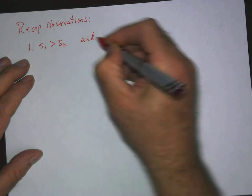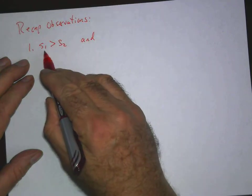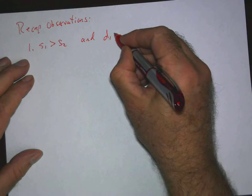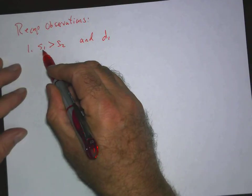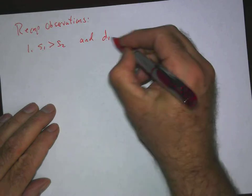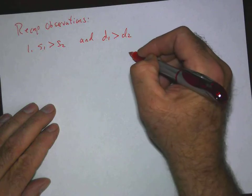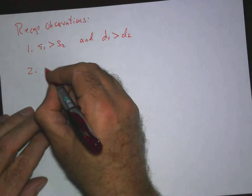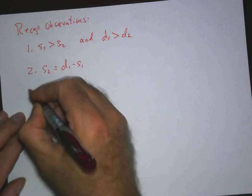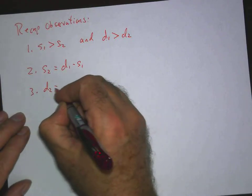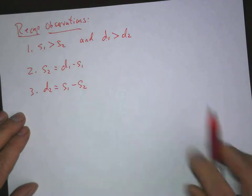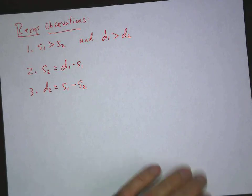To recap our key observations: S sub one is greater than S sub two, and D sub one is greater than D sub two. Also, S sub two equals D sub one minus S sub one, and D sub two equals S sub one minus S sub two. We will need these shortly.